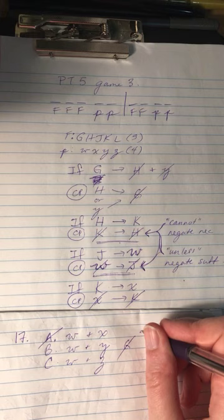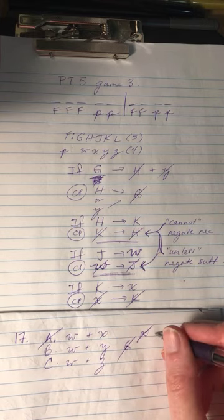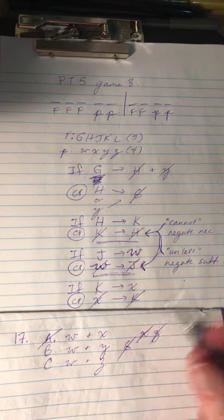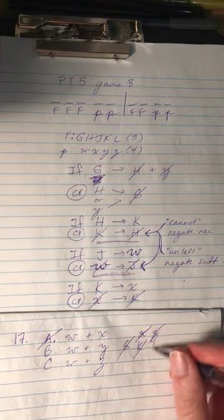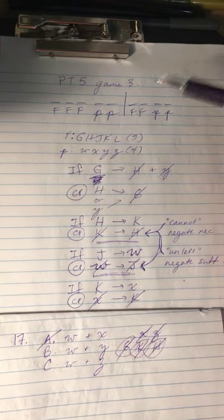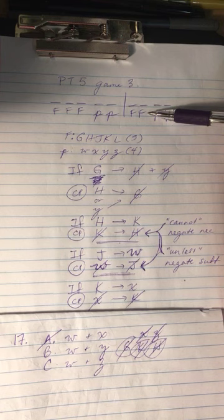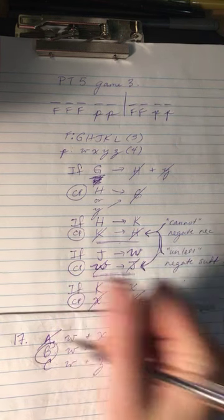then actually we have to look at the other side of that. So we know that X and Z are out. And if X is out, then K is out. And if K is out, then H is out. And we have one, two, three fish out, which is too many fish out. So B actually can't work.